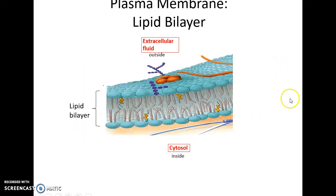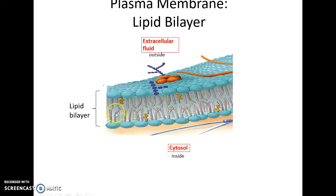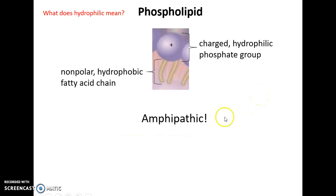The plasma membrane is a lipid bilayer, meaning it has two layers of phospholipids where their fatty acid chains face inward, away from the fluids, and their phosphate heads face outward toward the extracellular fluid or the cytosol inside the cell.